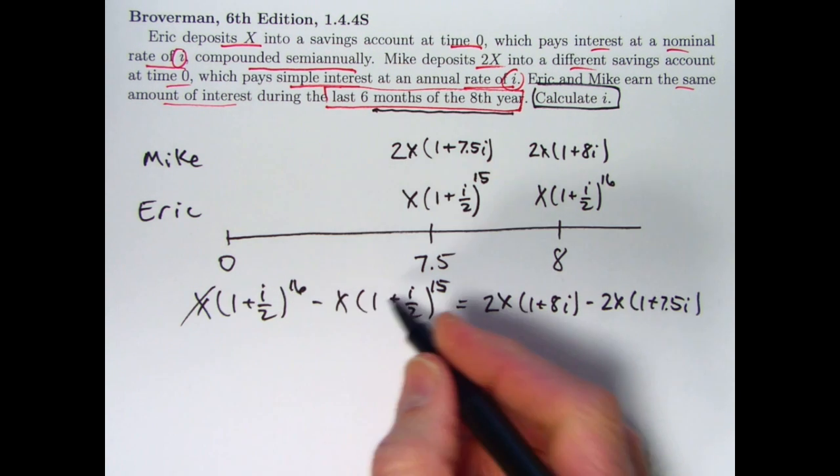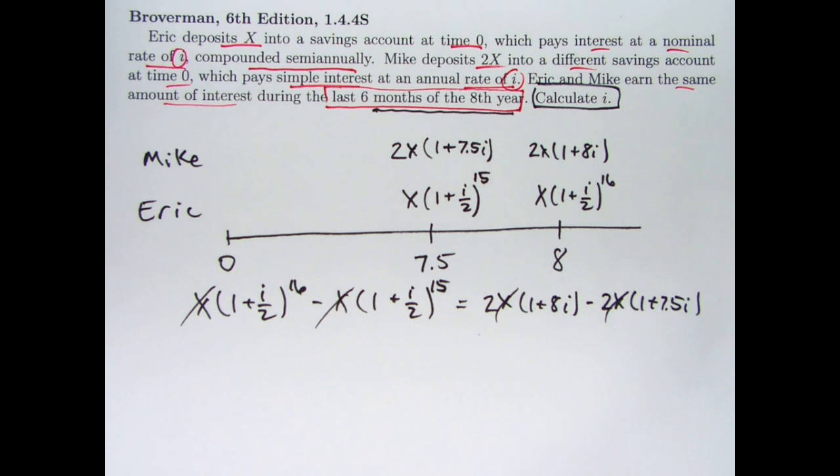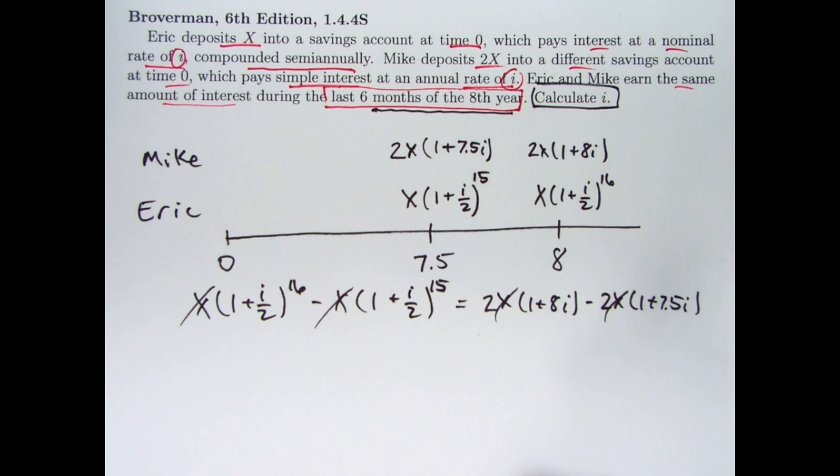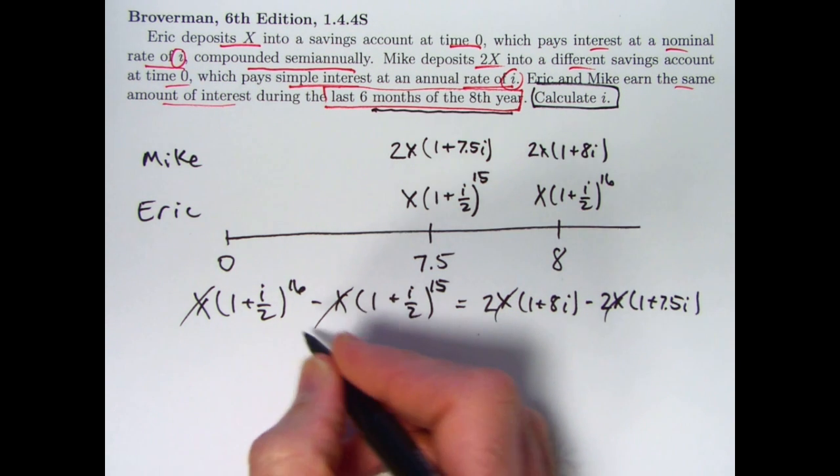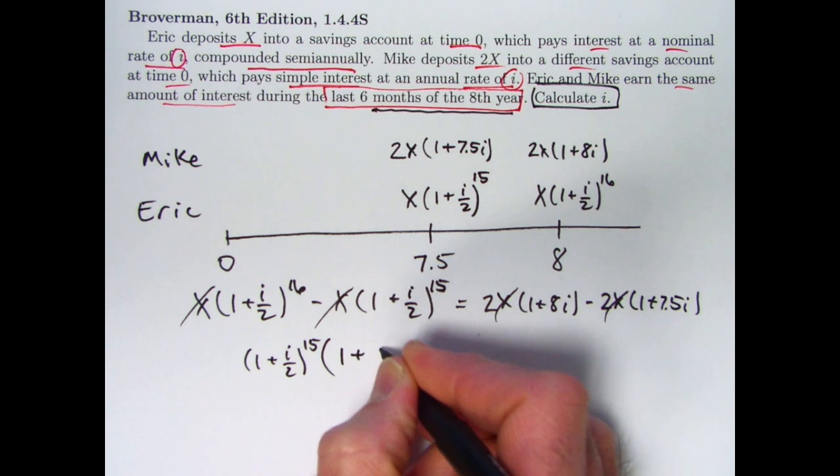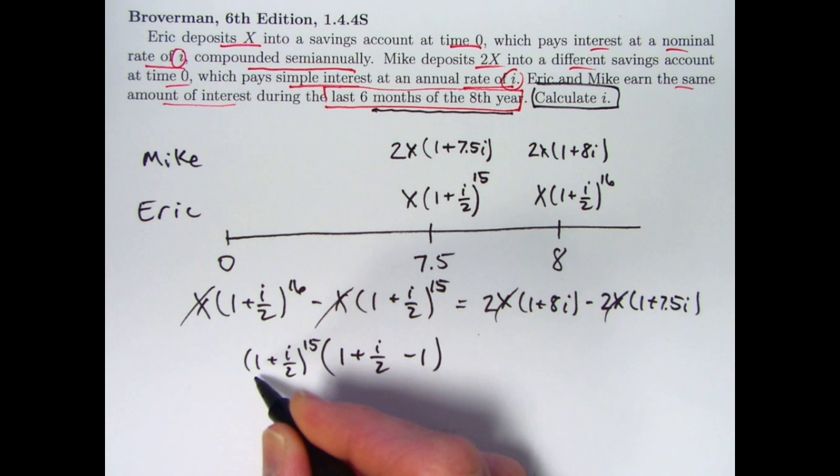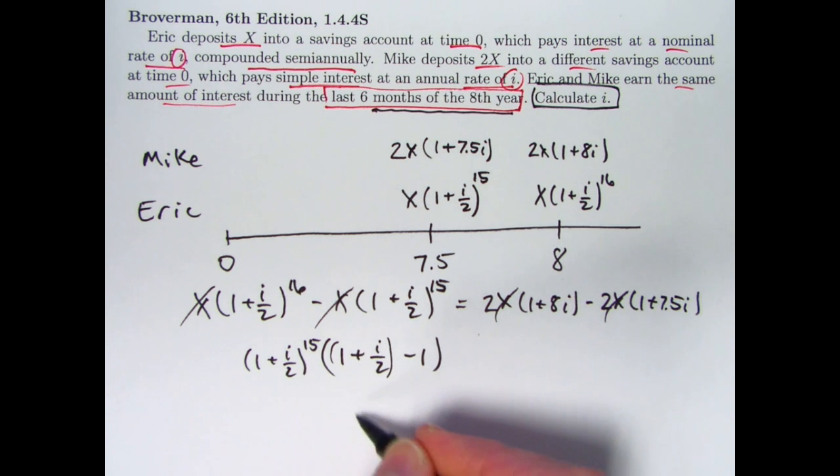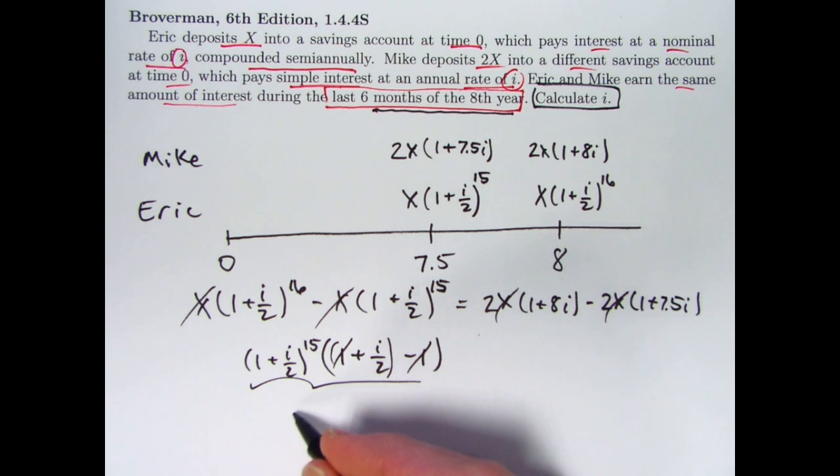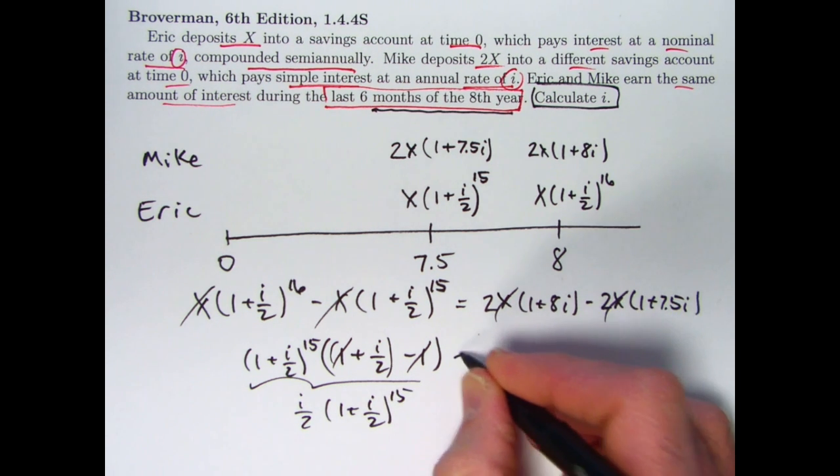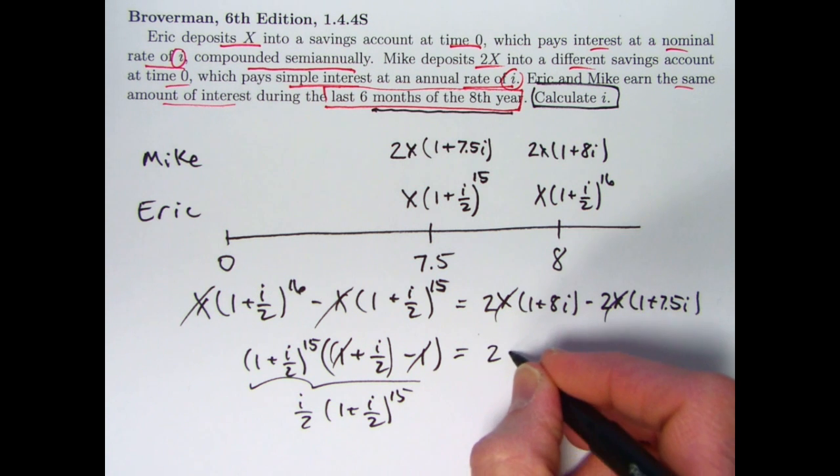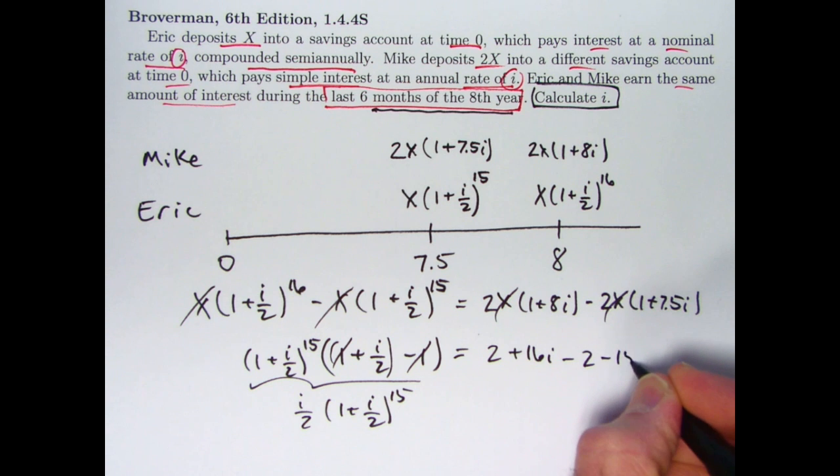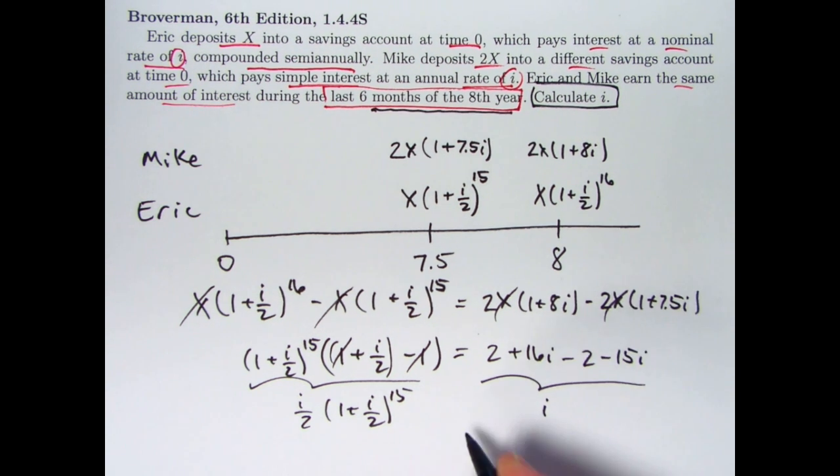Solve for i. It can be simplified, certainly. All the x's go away, actually. You can divide everything by x. The x doesn't matter as long as Mike is depositing twice as much as Eric. And you can factor out a common factor of 1 plus i over 2 to the 15th power on the left side. This simplifies to i over 2 times 1 plus i over 2 to the 15th. The right side simplifies as well. The x's went away. Distribute the 2 through 2 plus 16i, and then minus 2 minus 15i. That thing simplifies just to i. And these things need to be equal.